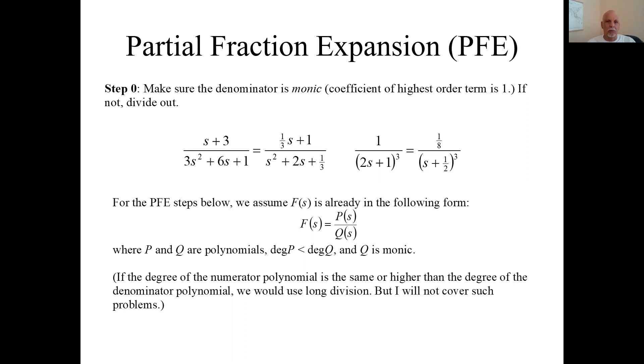I like to do things step by step. Not everybody does this the same way, but I'll tell you how I do it. First, what I call step zero, because I came up with this after I started step one, is we need our transfer function or our overall thing that we want to invert. First of all, it needs to be a polynomial in s over another polynomial in s, and the denominator needs to be monic.